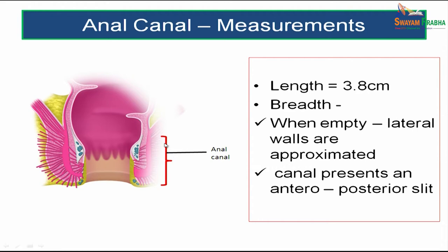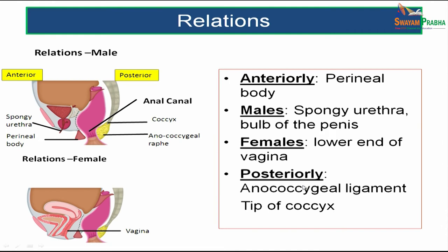The measurements of the anal canal: the length is about 3.8 centimeters. The breadth — when empty, the lateral walls are approximated so that the canal presents only an anteroposterior slit.